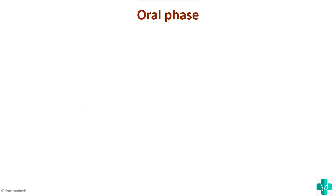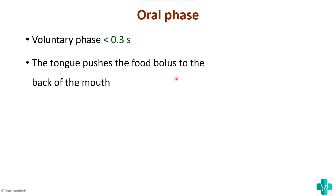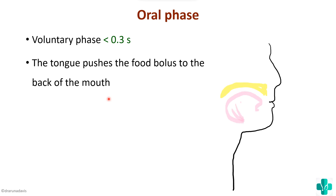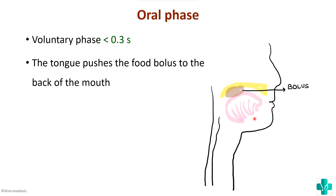The first is the oral phase, and this is the voluntary phase. It occurs in less than 0.3 seconds. It is during this phase that the tongue pushes the bolus of food to the back of the mouth. Suppose this is the outline of our face — this is the hard palate and this is the tongue. The tongue will push the bolus of food to the back of the mouth, and that is the oral phase.